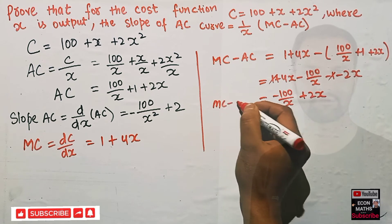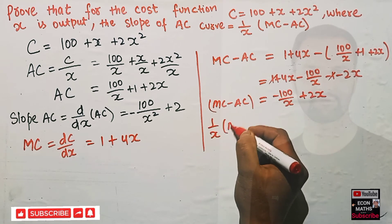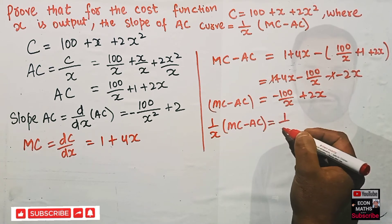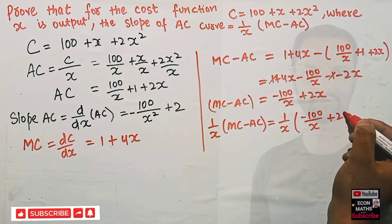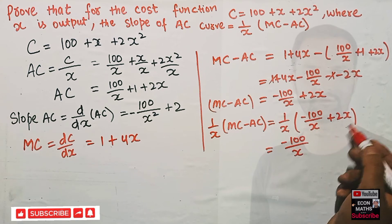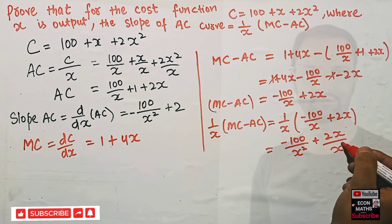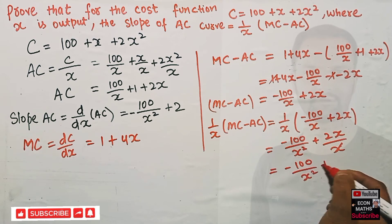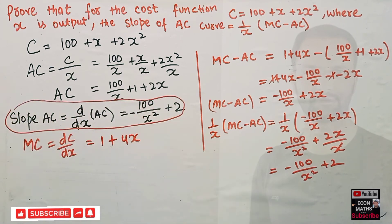Now we multiply MC − AC by 1/x: (1/x)(2x − 100/x). Multiplying each term by 1/x gives 2x/x − 100/x², which simplifies to 2 − 100/x², or equivalently −100/x² + 2.